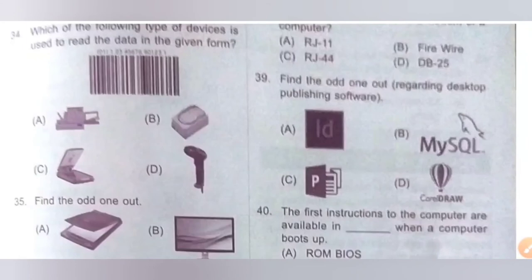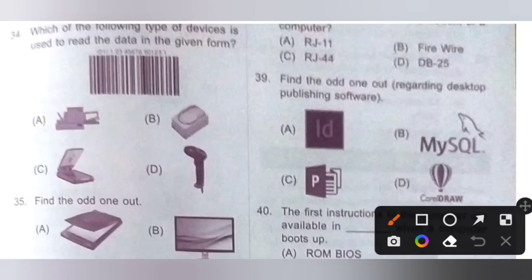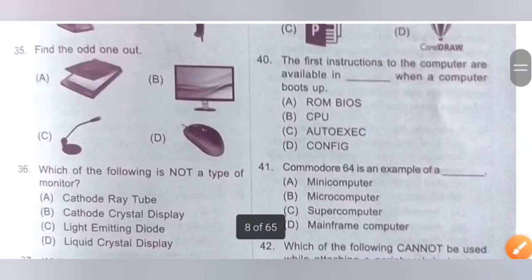Question 34: Which of the following type of device is used to read the data in the given form? The given form is a barcode, so we need a barcode scanner. Option D is the correct answer — barcode scanner.